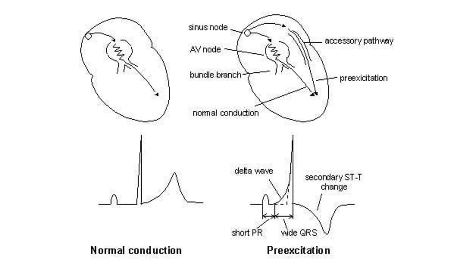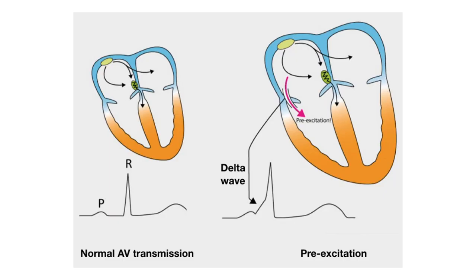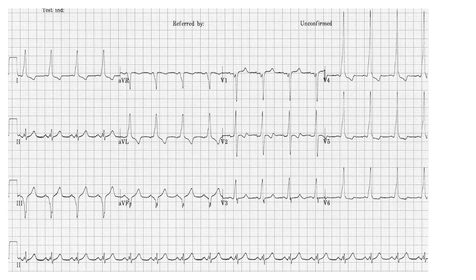Pre-excitation syndromes — WPW and Lown-Ganong-Levine syndrome — have been discussed before. In WPW, there is an accessory pathway called the Bundle of Kent. The triad is short PR, delta wave, and wide QRS. Looking at the ECG image, you can see a P wave immediately followed by the QRS complex with a small slur — that is the delta wave — and a slightly wide QRS complex. This is WPW.